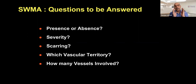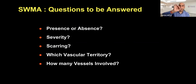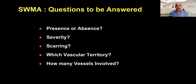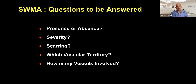In a report, you should not just mention presence or absence of wall motion abnormality. You should state: the severity — normal, hypokinetic, akinetic, dyskinetic, or aneurysmal with scarring — which vascular territory is involved, and how many vessels are involved — whether RCA, LAD, or circumflex — as this connotes the risks involved and outcomes for the patient.